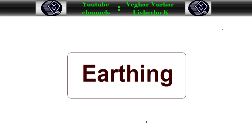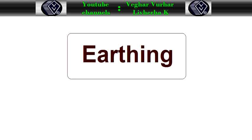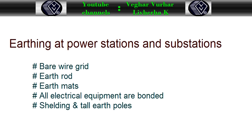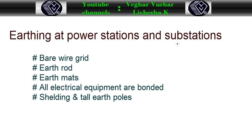Earthing at substations - the purpose of earthing is to protect the electrical equipment, animals, and human beings against electrical shock or electrical fault. We're going to explain earthing at power stations and substations. The purpose of earthing at a substation is to protect the electrical equipment and people around the substation from faults.